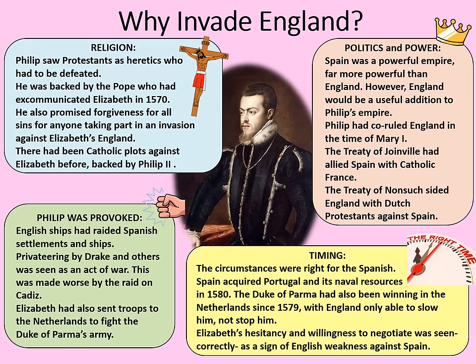The last reason was that the timing was simply right. Spain had acquired Portugal and its naval resources in 1580. The Duke of Parma had been winning in the Netherlands since 1579, with England only able to slow him and not stop him. Elizabeth's hesitancy and willingness to negotiate was seen correctly as a sign of English weakness. And so Philip ordered the Armada to set sail.